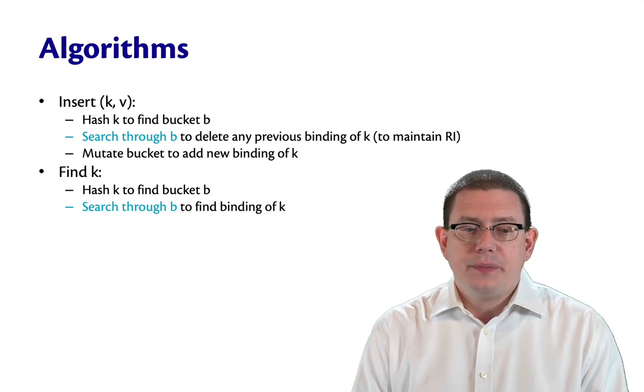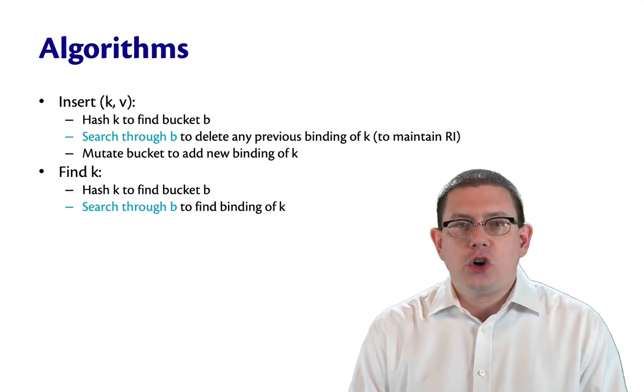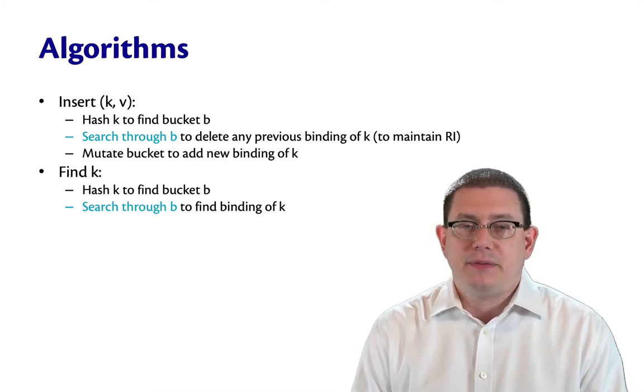The find operation is similar. We're going to hash the key k to find what bucket it's supposed to be in, and then we're going to search through that bucket linearly to find the binding of the key.